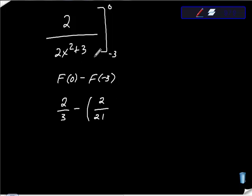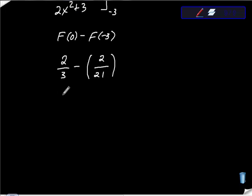Here we're going to get this into 21sts, so this is times 7, so 14/21. 14/21 minus 2/21 is equal to 12/21, isn't it? 12/21.